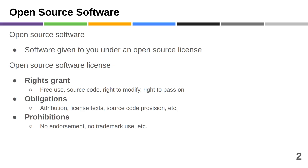Open source software is just software given to you under an open source license. By definition, open source software licenses give you certain rights. You get the right to freely use the software, the right to receive the source code, modify it, pass it on, and pass it on in modified form. This rights grant is common across all open source licenses — it's pretty much always the same whatever the specific license text.